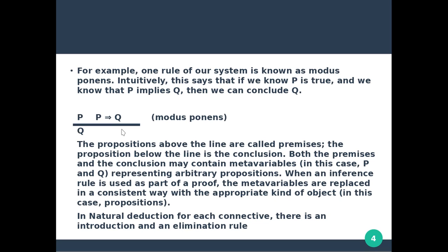The propositions above the line are called premises; the proposition below the line is the conclusion. Both the premises and the conclusion use meta variables. The meta variables P and Q represent arbitrary propositions. When an inference rule is used as part of a proof, the meta variables are replaced in a consistent way with the appropriate kind of object.